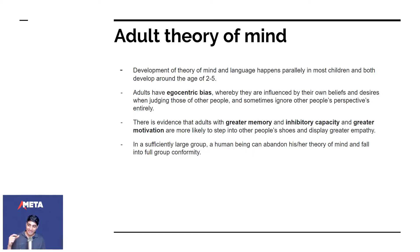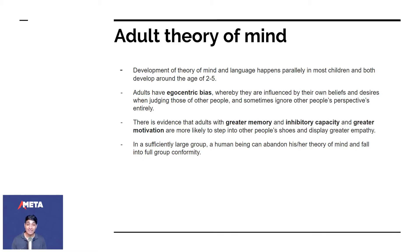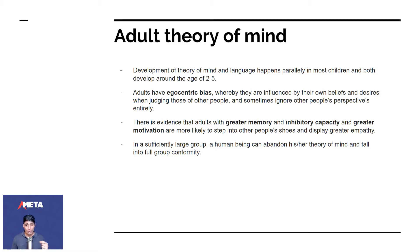While we know that Sally doesn't have information about the ball, in many other more complex situations we believe that everyone has full information. There's evidence that adults with greater memory, inhibitory capacity, and greater motivation are more likely to step into other people's shoes and display greater empathy. The smarter you are, the more you can regulate your emotions, and the more motivated you are, the more likely you are to take another person's perspective.